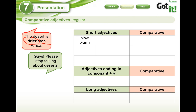So we have the first rule: we have to add -e, -r. For example: slower, warmer. We have 'slower than' — the turtle is slower than the rabbit. And Tarapoto is warmer than Arequipa. Yes, that's true.